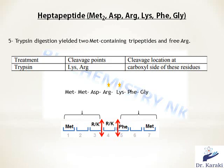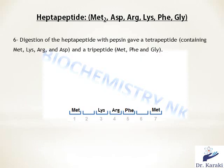To determine the exact positions of arginine and lysine, we re-read the given: trypsin digestion yielded two methionine-containing tripeptides and a free arginine. Since a free arginine is released upon cutting, arginine must be in the fourth position. Thus, lysine will be in the third position.